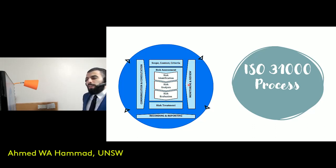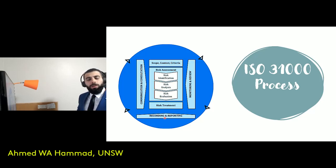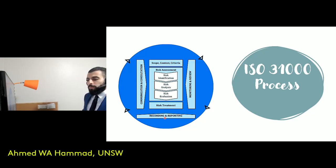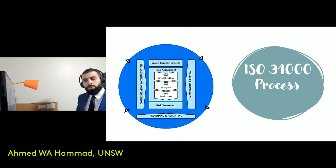There are other aspects of the process: monitoring and review, which is a constant activity; communication and consultation, which is important to ensure the risk management process is achieving its intended purposes; and recording and reporting to reflect on the system and whether you are managing risk in the right way. That's the overall view of the three main concepts — principles, framework, and process — as defined by ISO 31000.